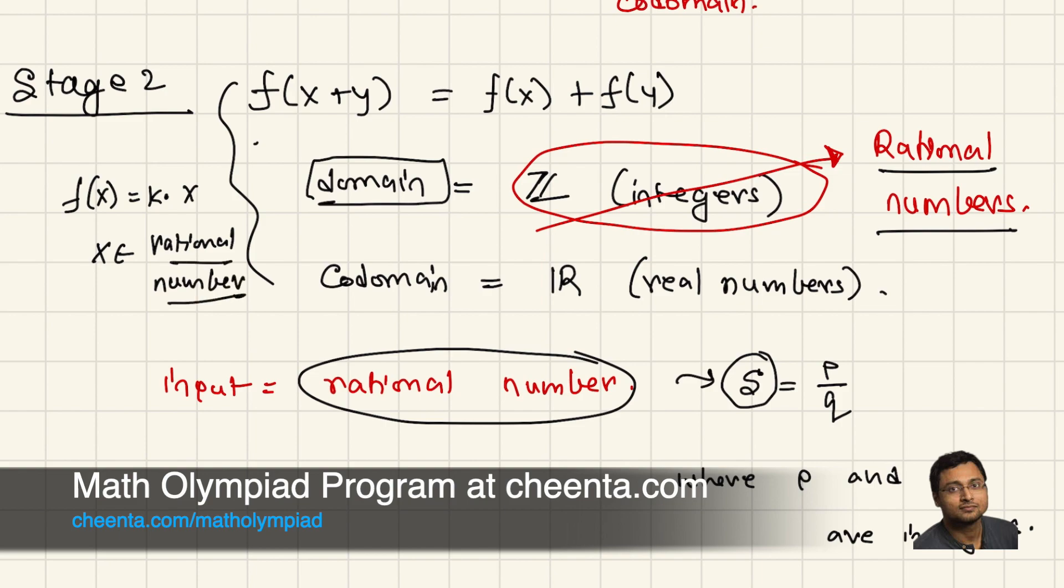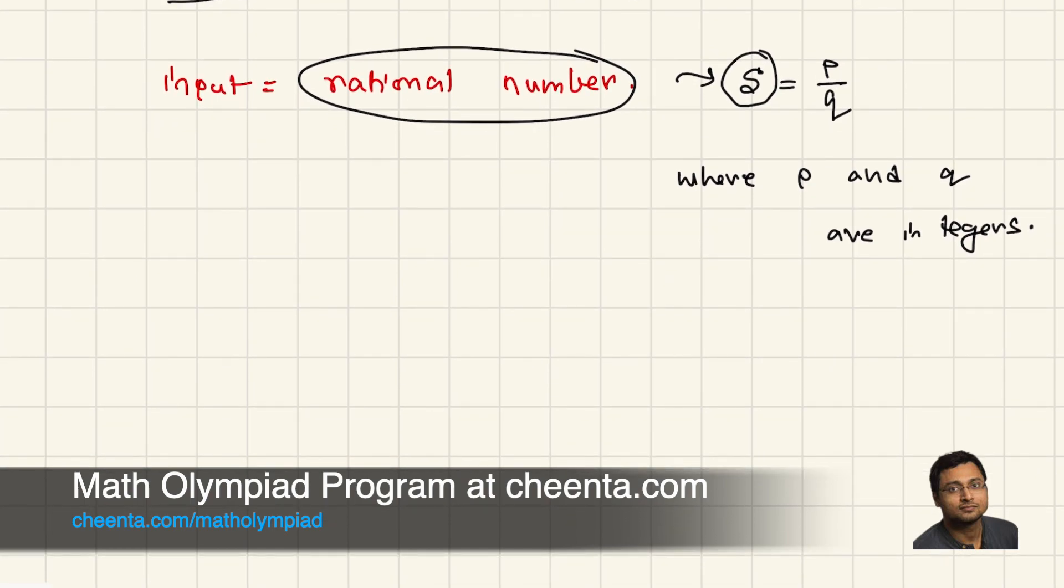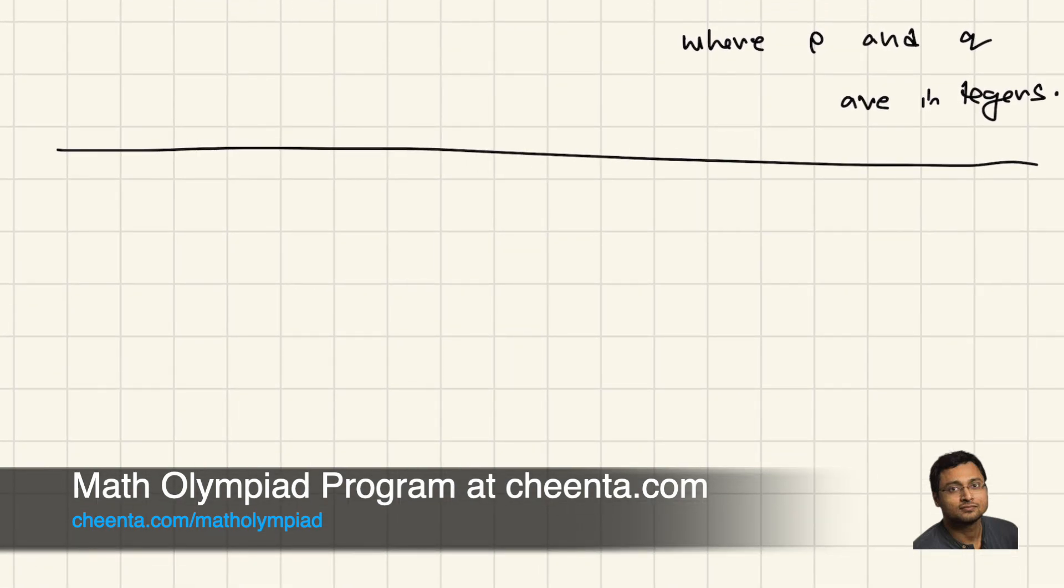Now, you may wonder what happens if I further improve it to real numbers. Will f(x) be still some constant times x if the domain is real numbers? Well, surprisingly enough, no. The answer is no. If you don't impose any other condition. So I'll write that. And you can try to do this. This is something that we will discuss in our main program. If the domain is real numbers,